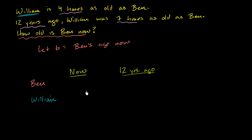So let's see what we can fill in here. So what is Ben's age now? Well, we just defined that as the variable b. That's the unknown. That's what we have to figure out. So that's just going to be b.